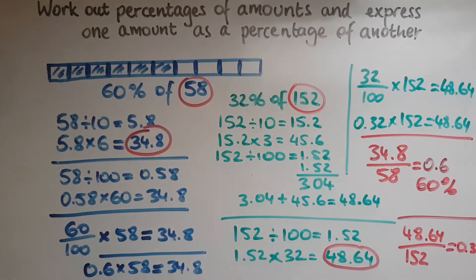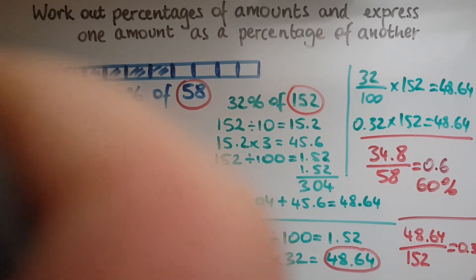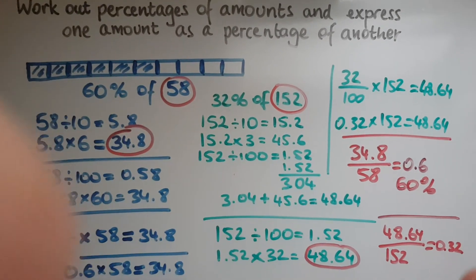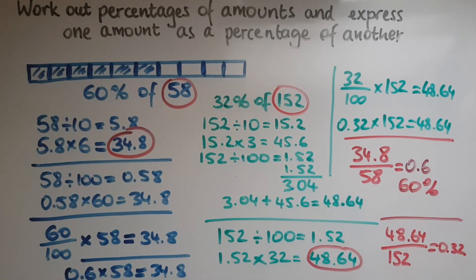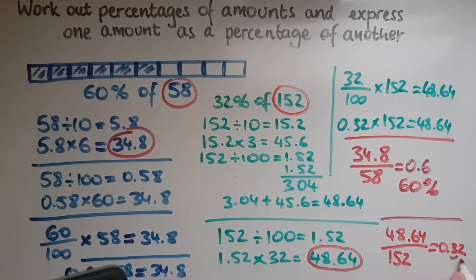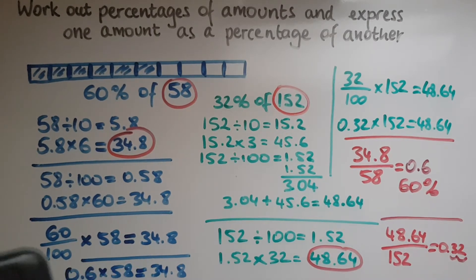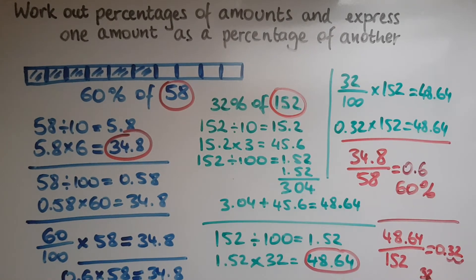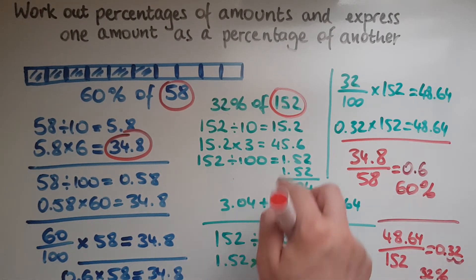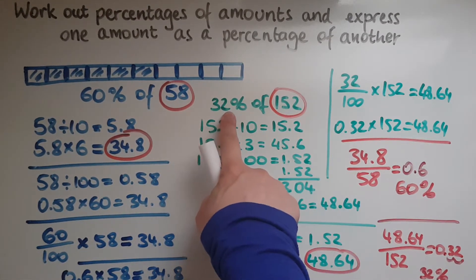That gives me 0.32. So that is the decimal. How do we turn that into a percentage? We look at the two digits after the decimal point.